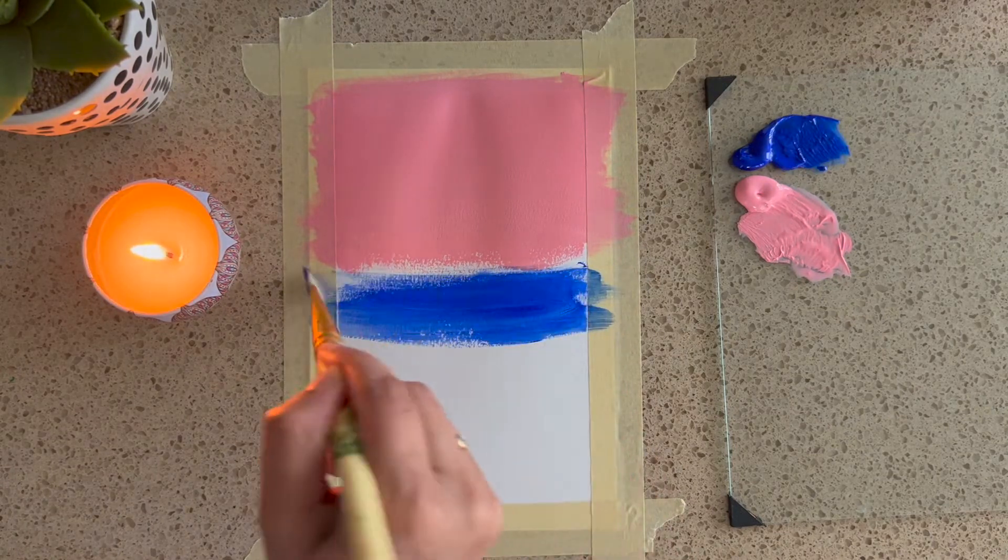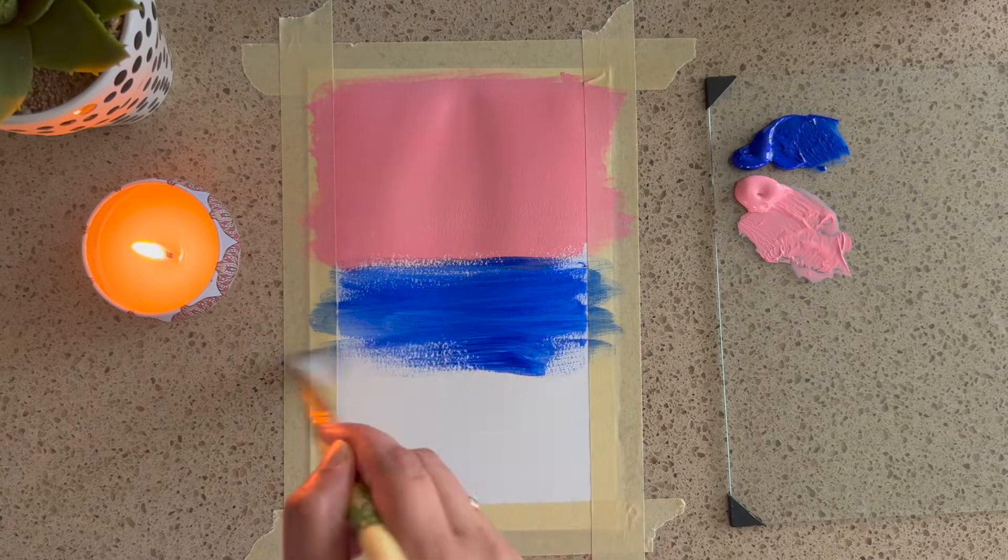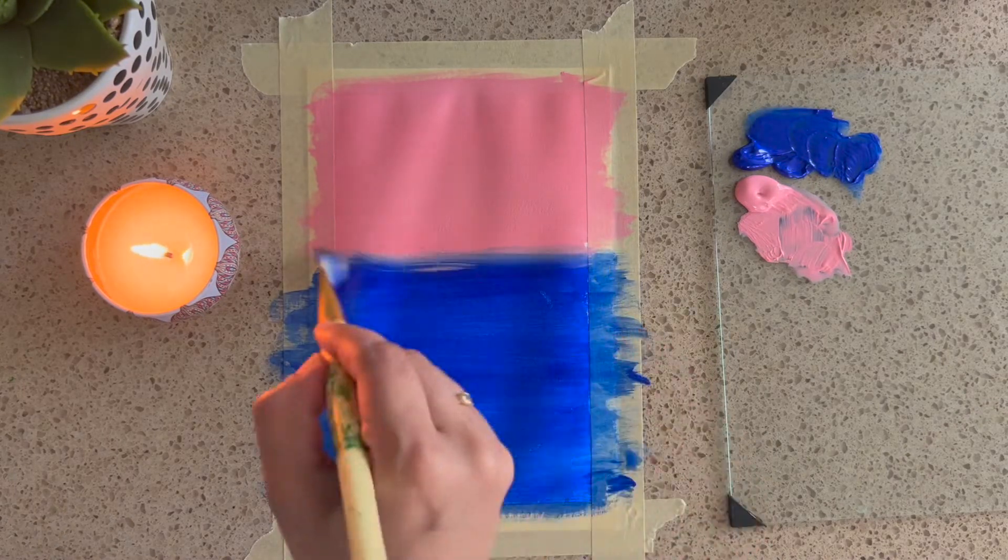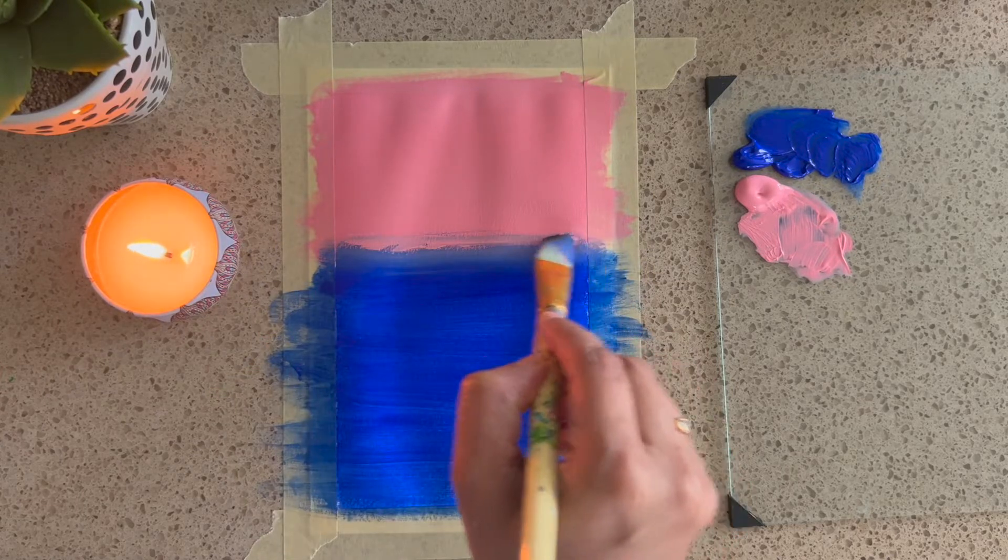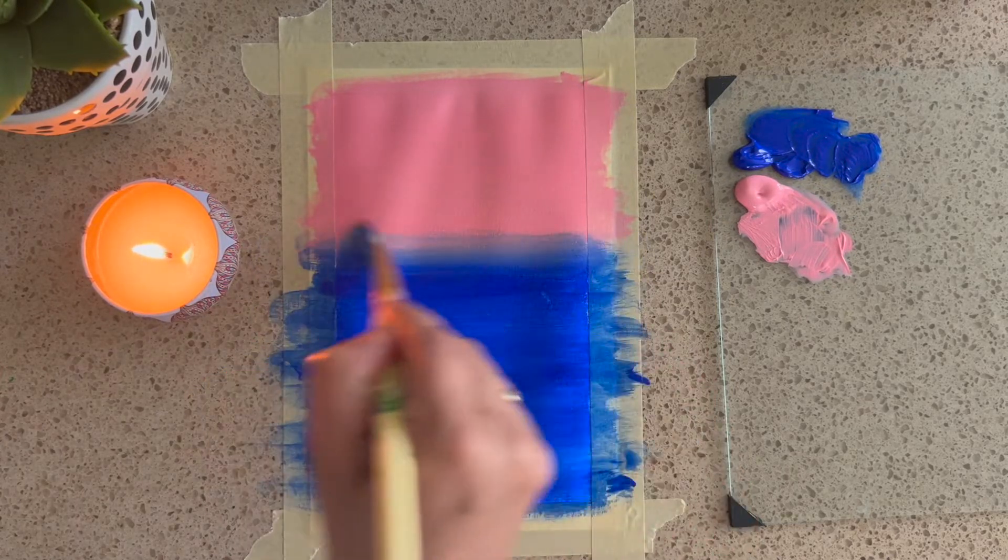I am using a filbert brush over here. I have removed the blue color with the help of a cloth and now I am blending both the colors. To blend the colors properly, it is very important that both the colors should be little wet.